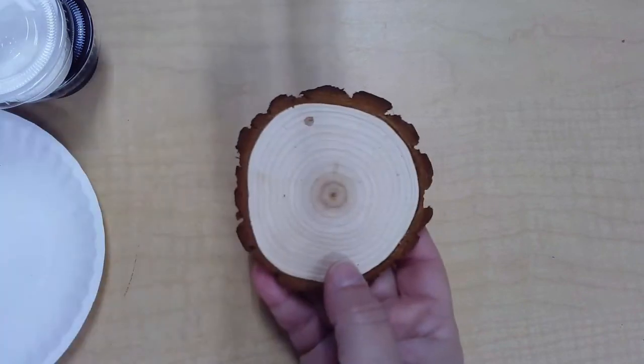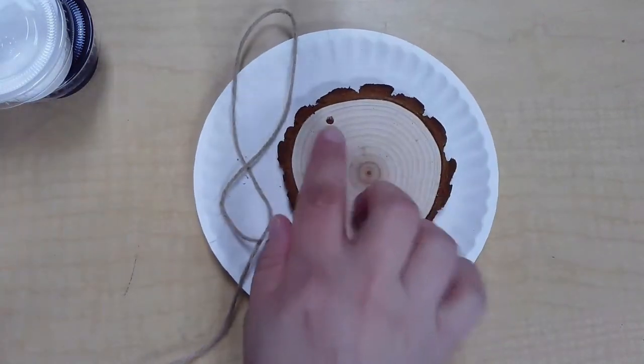Today we're going to do our last craft for July. We're going to decorate our wood slices with constellations.